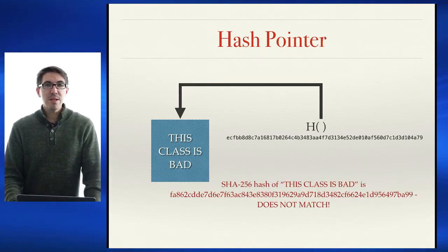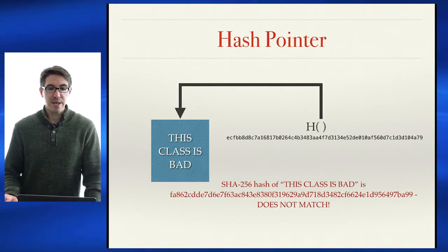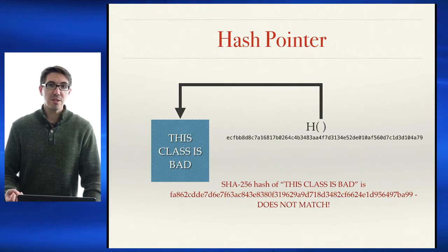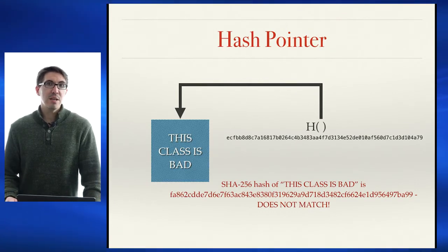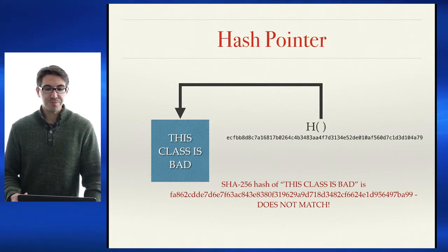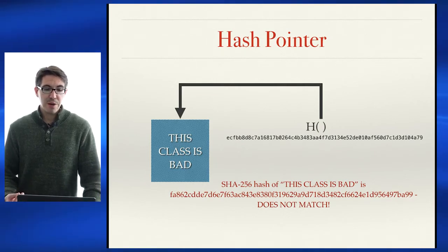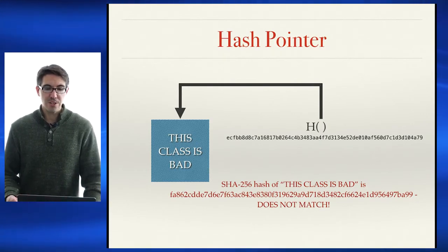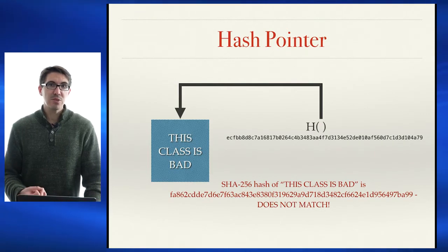Now let's assume somebody tries to modify the data — it doesn't have to be malicious; there could be data corruption or an inadvertent change. Our hash pointer still has the same hash value ECFBB..., however our string now says 'THIS CLASS IS BAD' instead of 'THIS CLASS IS GREAT' — an obvious untruth. If we run the SHA-256 hash function on 'THIS CLASS IS BAD,' we get FA86..., which does not equal the hash stored in the hash pointer. Therefore we know that this data has been modified since the creation of this pointer.